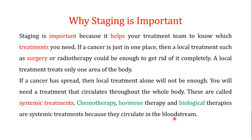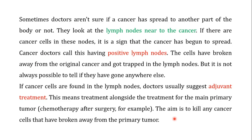It is very important to go for the staging of cancer because the staging is going to decide what kind of treatment you will need. Sometimes doctors aren't sure if cancer has spread to another part of the body or not, so they look at the lymph nodes which are present near the cancer. If there are cancer cells in these nearby lymph nodes, it is a sign that the cancer has begun to spread — doctors call this having positive lymph nodes. The cells have broken away from the original cancer and got trapped in the nearby lymph nodes, but you will need further diagnostic tests to confirm whether they have moved into other parts of the body.